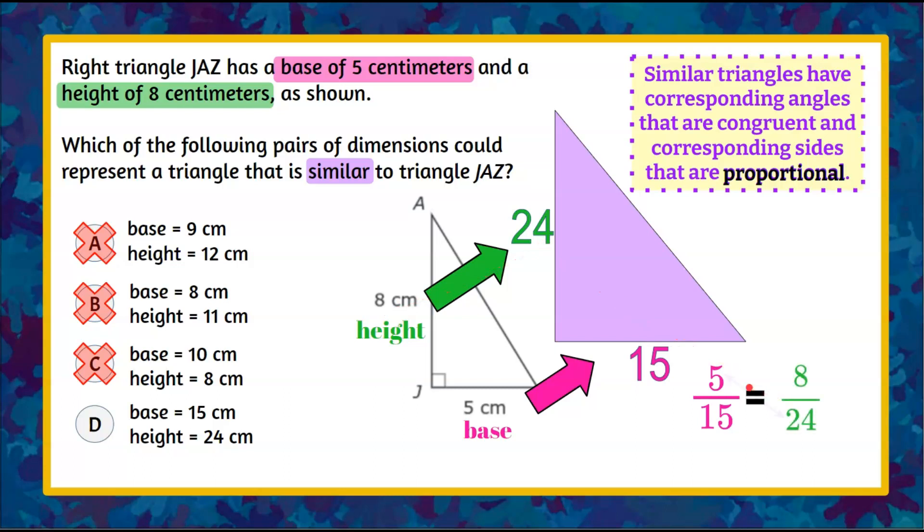And now cross product 5 times 24 is 120. Cross 15 times 8 is also 120. It checks out 120 equals 120. So therefore the pair of dimensions that would represent a similar triangle is answer choice D.